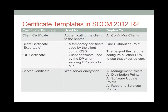The third certificate template is what's called a server certificate — we can call it a web certificate or an IIS certificate. This is used for web server encryption. You roll this out to all management points, all distribution points. Note that the key component of those two services is IIS. You also need to roll this out to all SUPs and all reporting services points, as well as all other Configuration Manager services that use IIS.